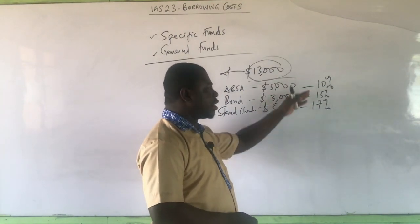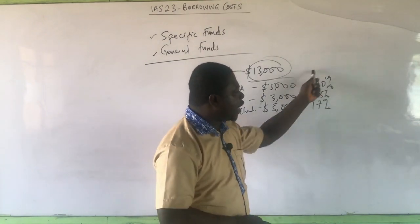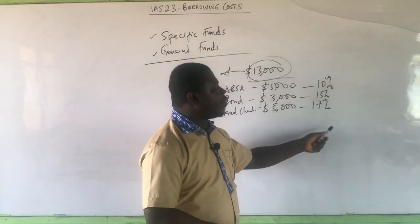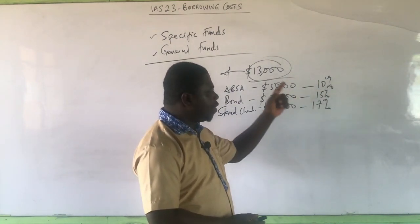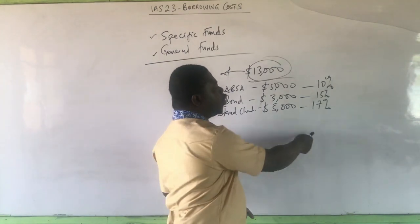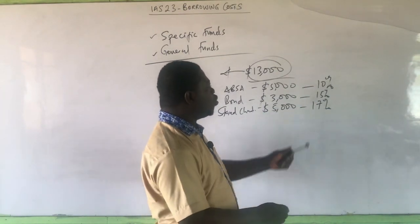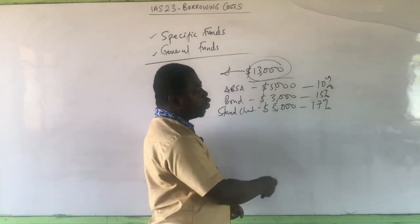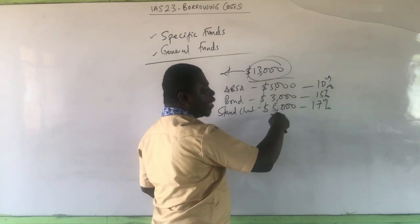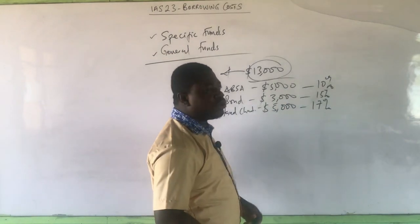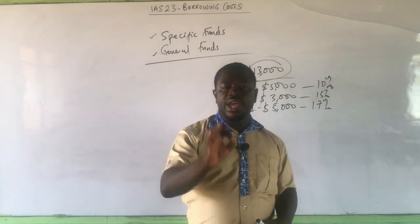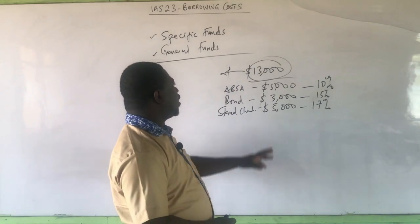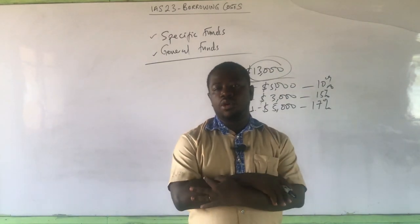We are not going to calculate these separately. We are going to find an average of these three rates and apply it on the $13,000. The average must not be a simple average — it must be a weighted average. So we are not just going to add the three and divide by three. We multiply by the weights — the loan values are the weights. We multiply the interest by the weights, divide by the total amount, and we get a weighted average interest rate to apply on the $13,000 to calculate our borrowing costs.